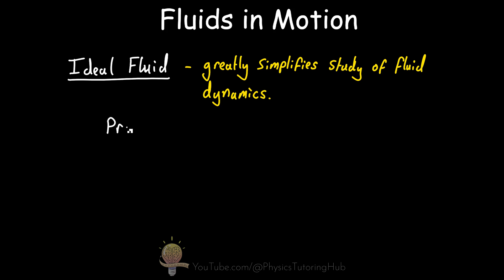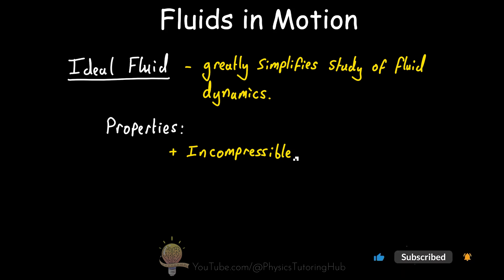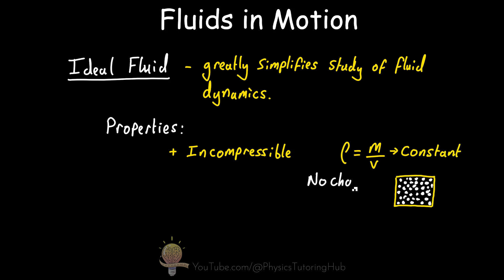So what is an ideal fluid? An ideal fluid has these properties. First, an ideal fluid is incompressible — in other words, the molecules that make up the fluid cannot be pushed closer together. This also means the fluid's density is constant, and remember, density is mass over volume.